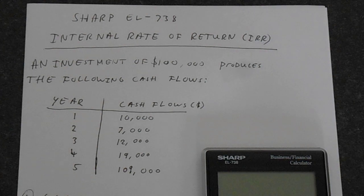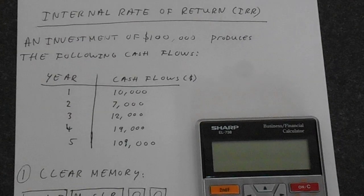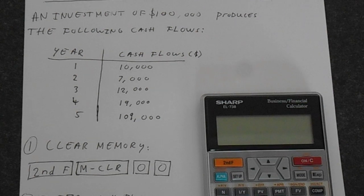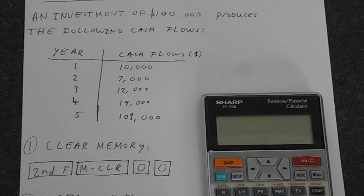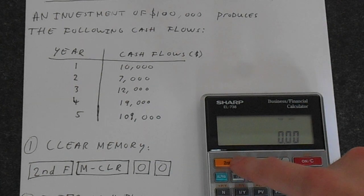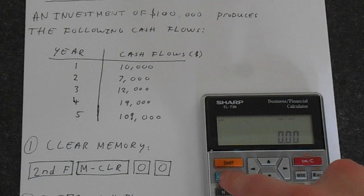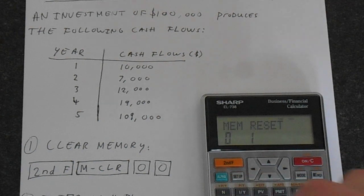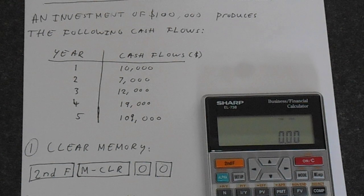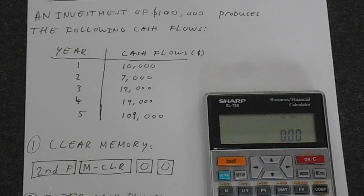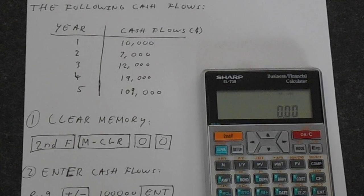The first step is to clear the calculator's memory — this is always the first step and this is the best way to do it. If you use the CA button it won't clear the cash flow memories, so that's no good. Use this method: press second function, then mclear, which is on the alpha button zero and zero, to clear the memory. Now we can be confident that all memories are clear and previous calculations won't affect what we're doing.